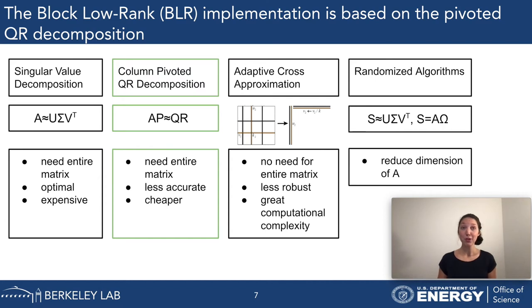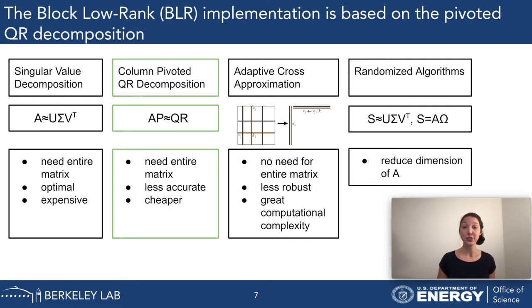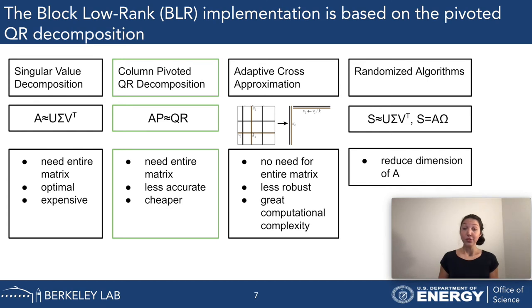Let's start with BLR, block-low-rank. I have highlighted our implementation choice—the column-pivoted QR decomposition—but let me briefly mention the other options. Starting with the singular value decomposition: here we factorize our matrix into three smaller matrices. This method requires the entire matrix, it is an optimal approach which is the advantage, but it is expensive, which is the disadvantage.